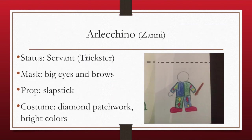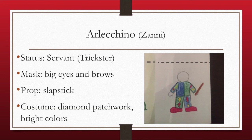Our last character is Arlecchino — again a zani servant, known for being the trickster. His mask always features big eyes and big brows because he's supposed to have over-the-top reactions. His prop of choice is a slapstick — a device that looks like you're hitting someone hard but is a mechanism that makes a slapping noise, making it appear like they're beating someone up when they're not. His costume is again that diamond patchwork in bright colors. Arlecchino is always the trickster servant trying to get more than he has, and he's smarter than people think he is.